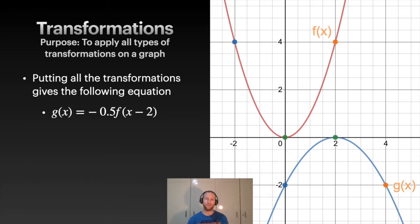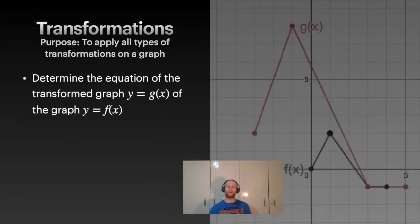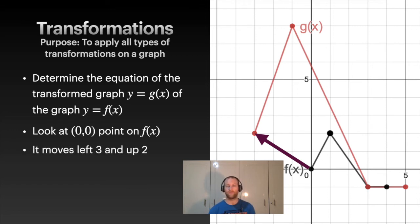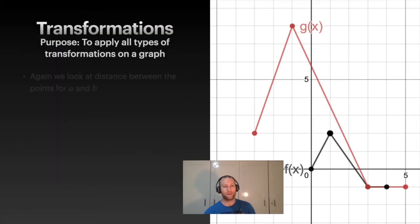Let's try it with a different graph. Here we don't have a function that you've seen before, but you can see that these are similar to each other, so there's some sort of transformations applying. Again, we're going to look at the zero-zero points and figure out where that point goes on the g(x). So it moves here—we moved left three and up two. From this we can figure out what h and k are: h is going to be negative three because we move to the left, and we're going up two.